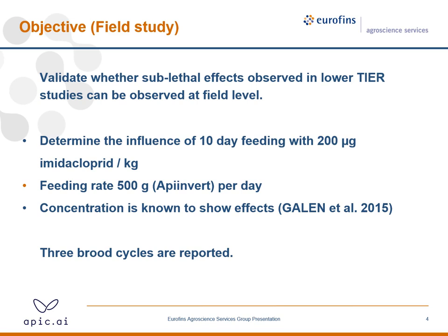We wanted to determine the influence of a 10-day feeding with 200 microgram per kilogram imidacloprid. The feeding rate was 500 gram sugar solution per day, so the actual rate the hives were getting was 100 microgram per hive per day. This concentration is known to show an effect, based on studies where they were feeding pollen patties and also sugar solution.